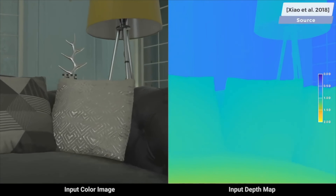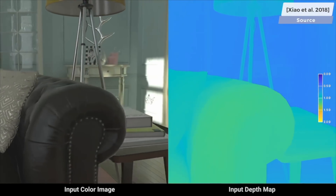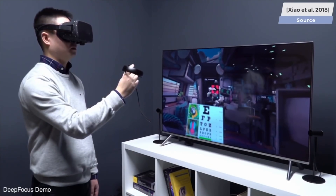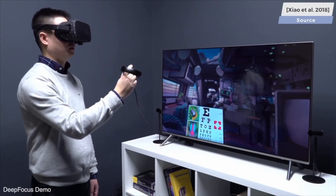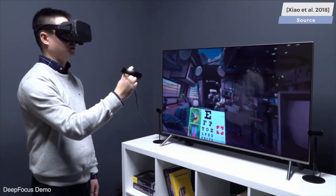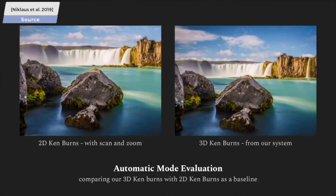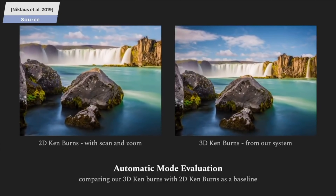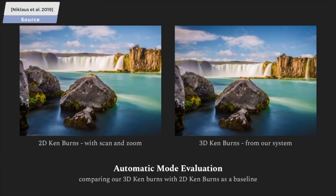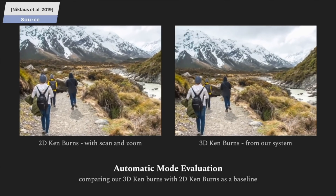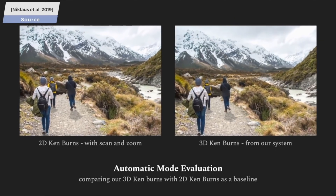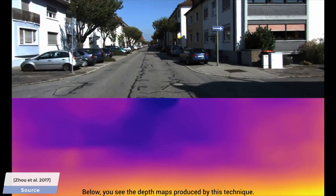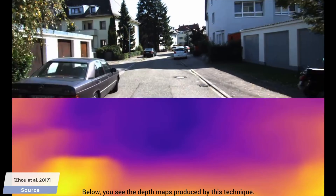What does not go without saying is that if we could teach computers to do the same, we could do incredible things. For instance, this learning-based technique creates real-time defocus effects for virtual reality and computer games, and this one performs the Ken Burns effect in 3D — in other words, zoom and pan around in a photograph, but with a beautiful twist, because in the meantime it also reveals the depth of the image. With this data, we can even try to teach self-driving cars about depth perception to enhance their ability to navigate around safely.